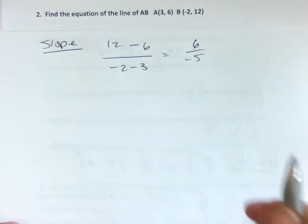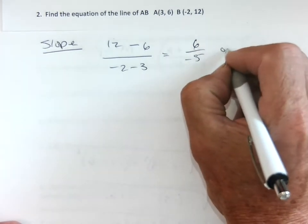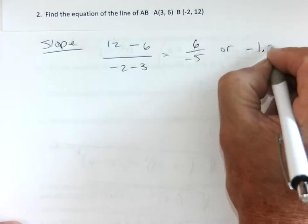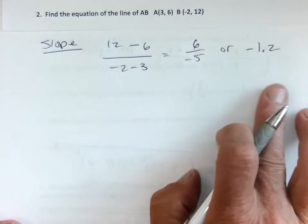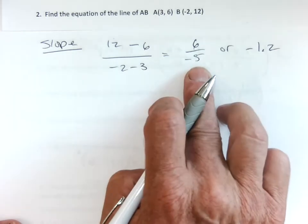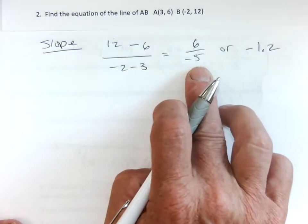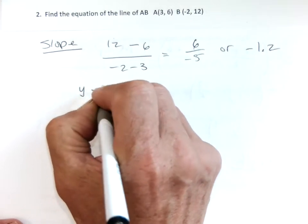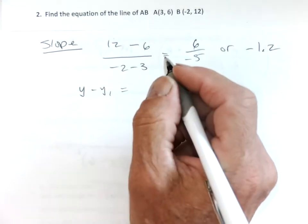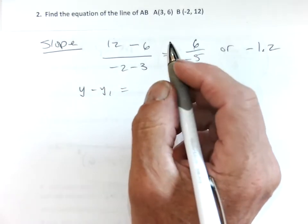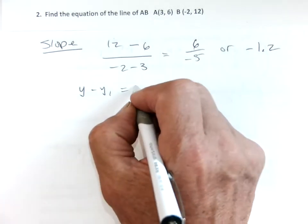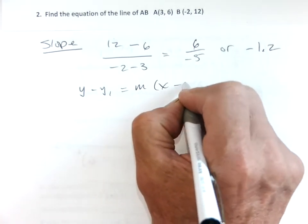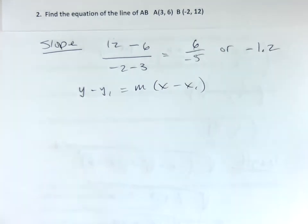6 over negative 5 is my slope. In this case, I might even change it to a decimal, really, or a negative 1.2, just because it's going to be easier to work with a decimal than a fraction. Now, if it's the equation line, I can pick either point. I like the y minus y1. I like this formula. You guys might like Jose, you liked y equals mx plus b, right?